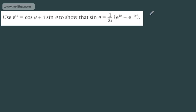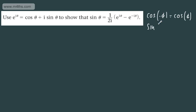Let's go back to the idea that cosine is an even function, so cosine of minus theta is equal to the cosine of theta. Now let's look at sine — sine is an odd function. The sine of minus theta is equal to minus sine of theta. And we're going to use that right here.